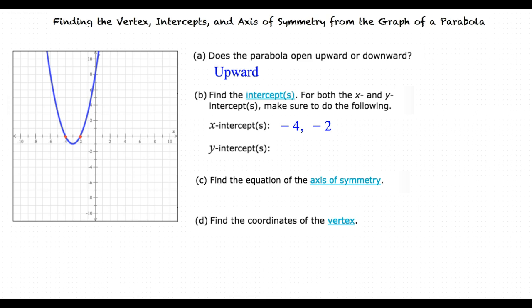So that means that the y-intercepts are where the graph crosses the y-axis, which means the y-intercept would be 8, right? That's right. We can see on our graph that the parabola crosses the y-axis at y is equal to 8.